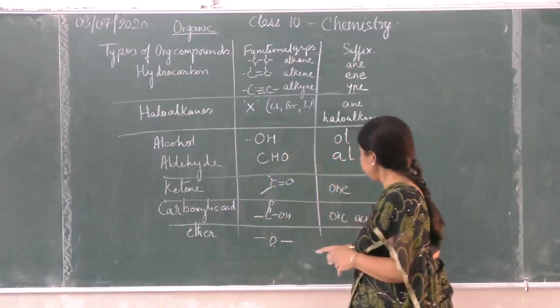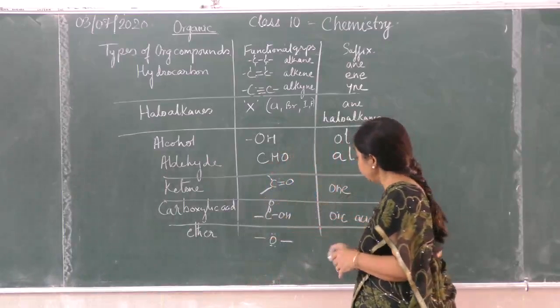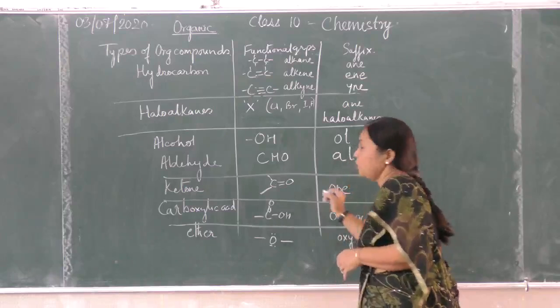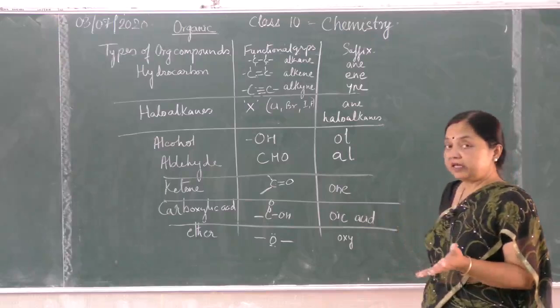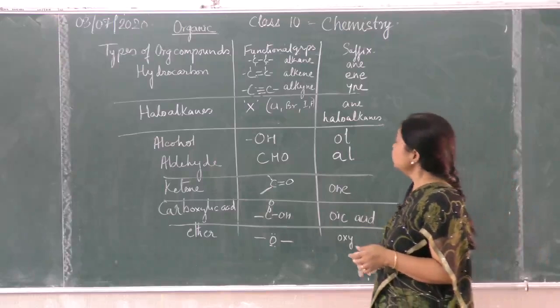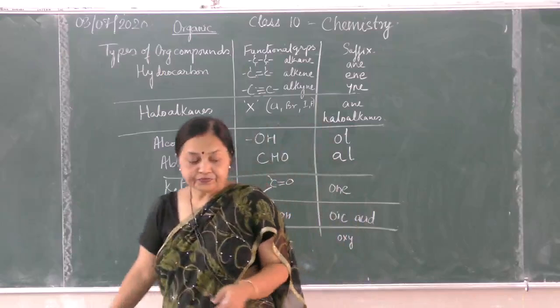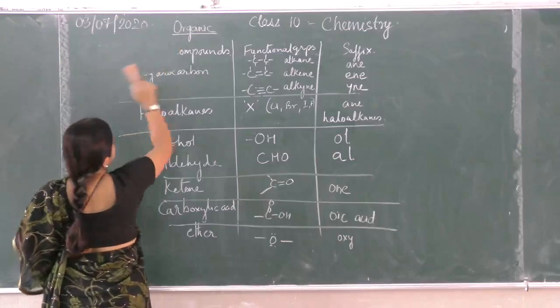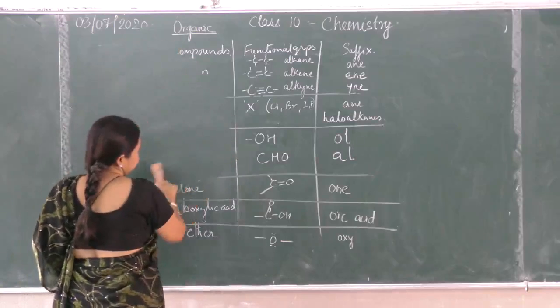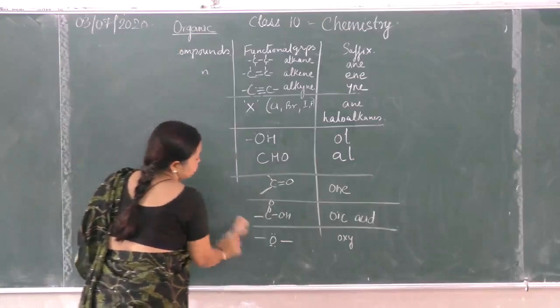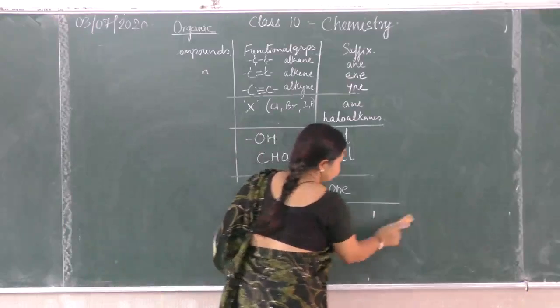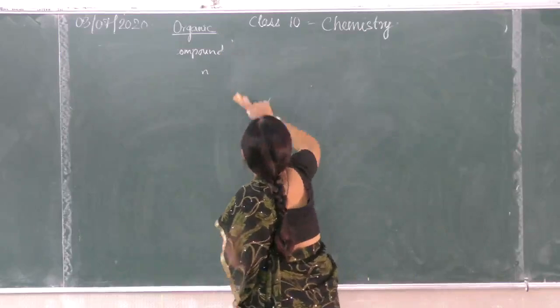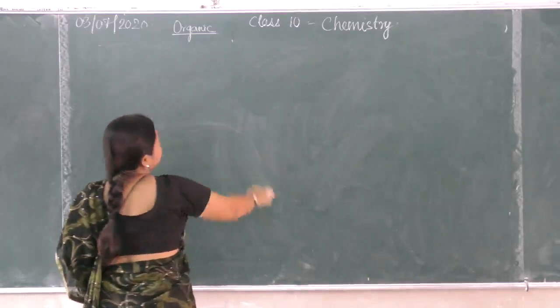Ether - this group has only oxygen flanked by alkyl groups. This is -oxy, like methoxy methane, ethoxy ethane. The suffix used here is -oxy. Now hydrocarbons can further be classified into saturated, unsaturated, straight chain, and cyclic.